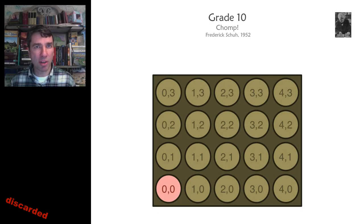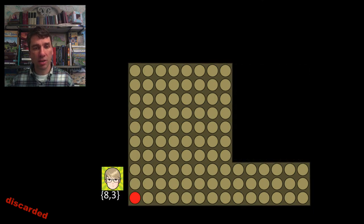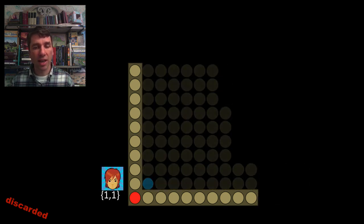Chomp is a game that you can use to give students practice calling out coordinates on a chocolate bar. So the 0, 0 position is poison. And whenever you chomp on a bit of chocolate, let's say that you are going to eat this bit of chocolate, then everything to the north and west is eaten as well. So you take turns doing that, and of course the person who eats the poison at the end is going to lose. So here the yellow player is going to lose.